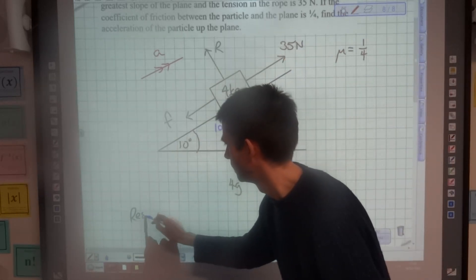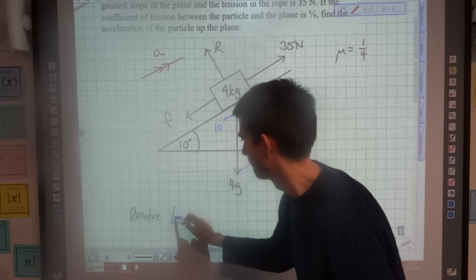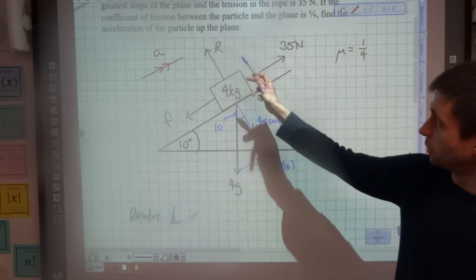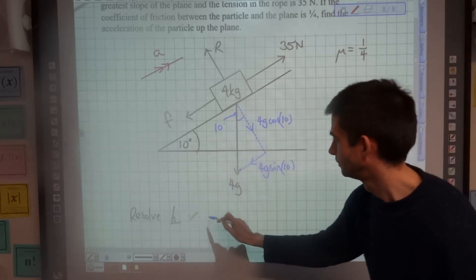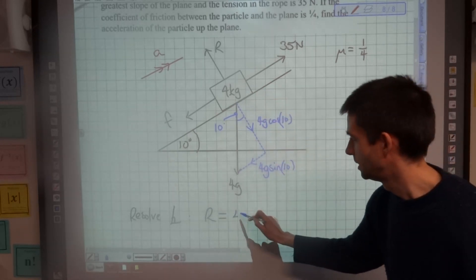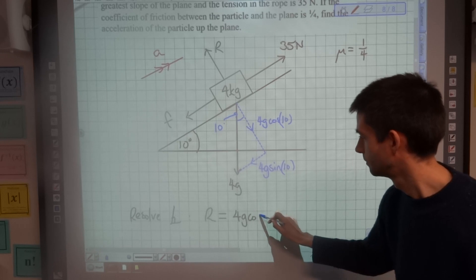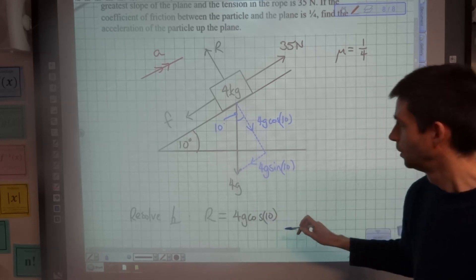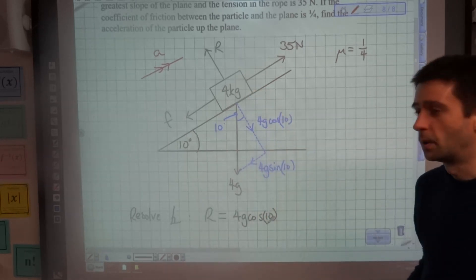So resolving perpendicular to the plane, I've got this reaction force R which is going to be equal to 4G cos 10, which is the perpendicular component of the weight.